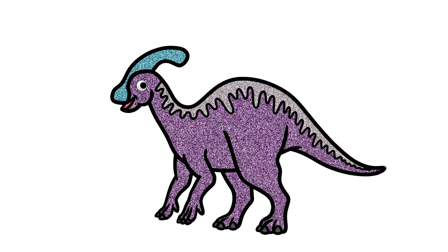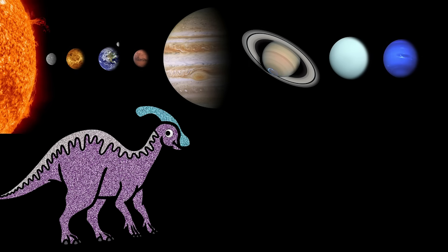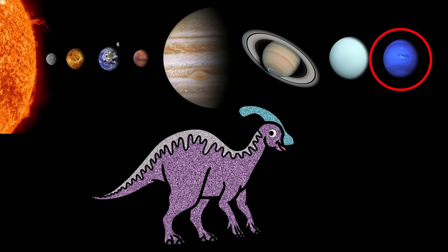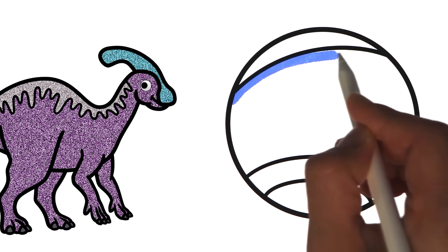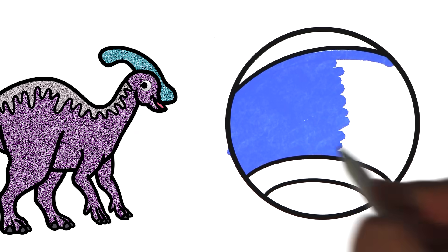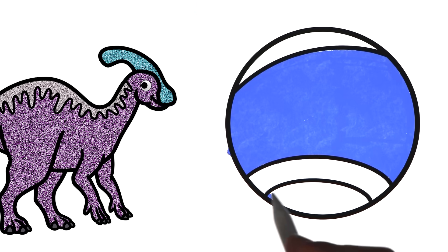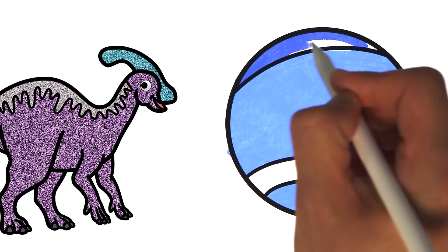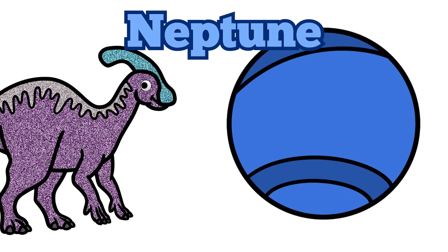Hello, my name is Parasaurolophus. Hello, Parasaurolophus. What's it like on Neptune? Neptune is the eighth and the most distant planet from the sun. Since Neptune is the farthest planet from the sun, it has the biggest orbital radius. It takes 165 Earth years for Neptune to go around the sun one time. That's one birthday every 165 years! Thank you, Parasaurolophus. Bye! Bye, everyone!